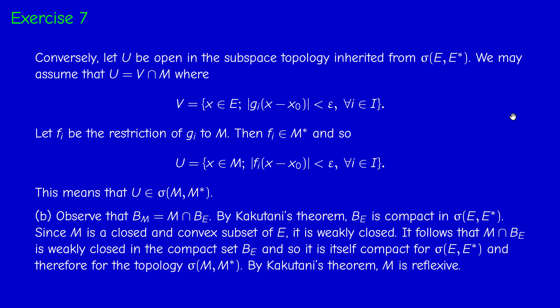This is again a typical examination proof — you should understand this argument very well. We need the fact that M is weakly closed in order to prove B_M is compact, because it must be closed in the Hausdorff space. The result is not true if M is not closed, because a subset of a compact space must be closed in order to be compact.